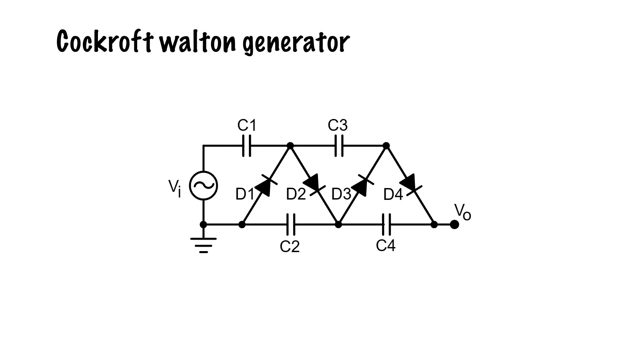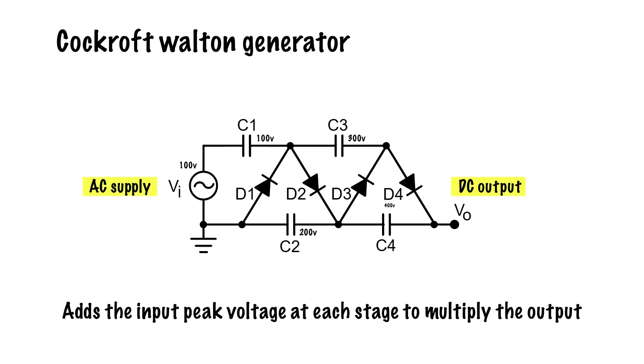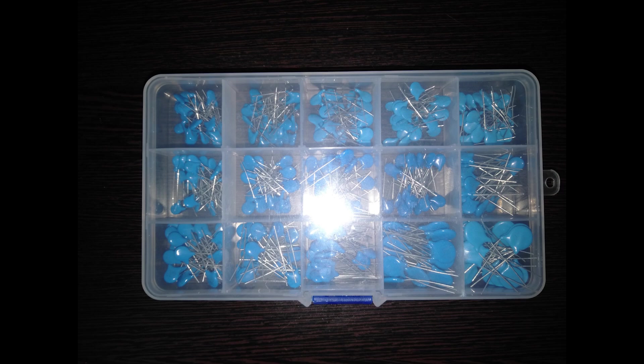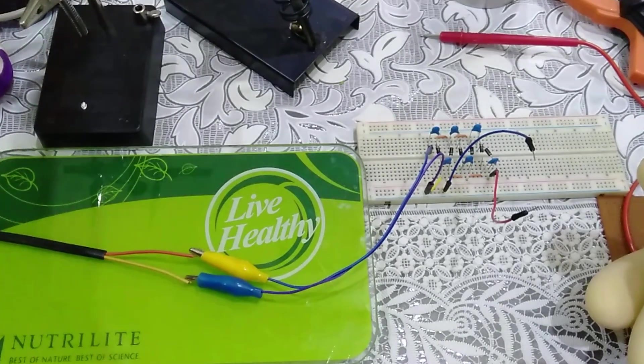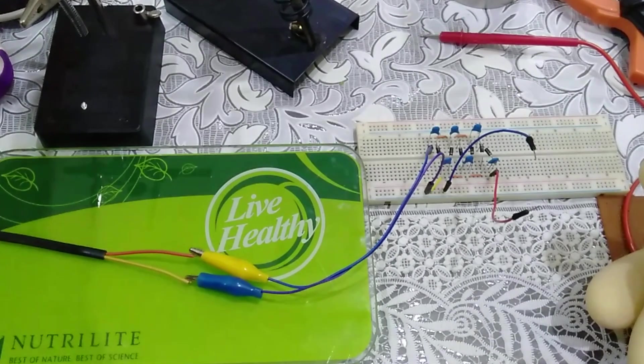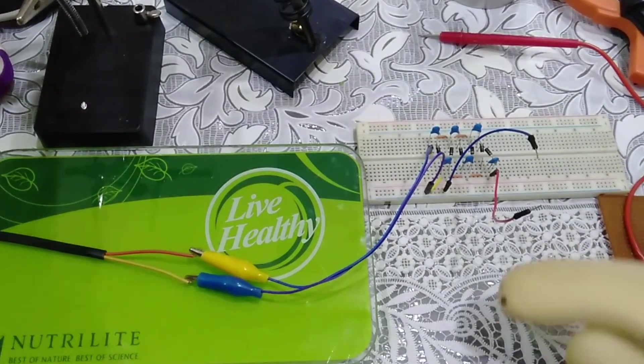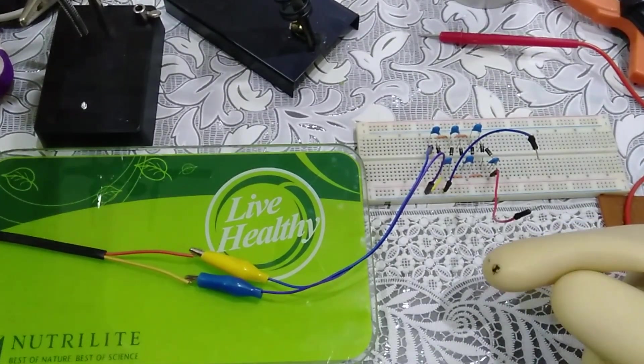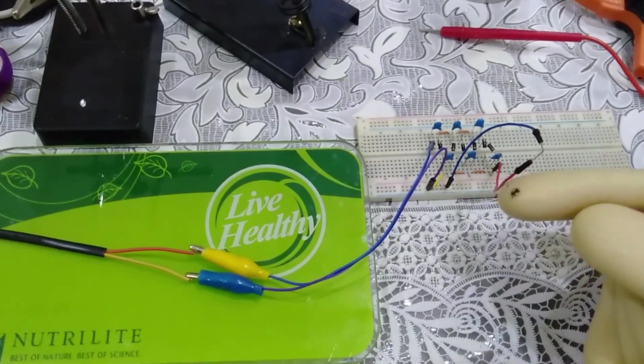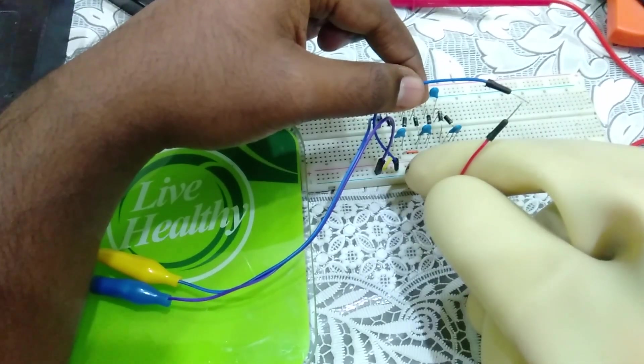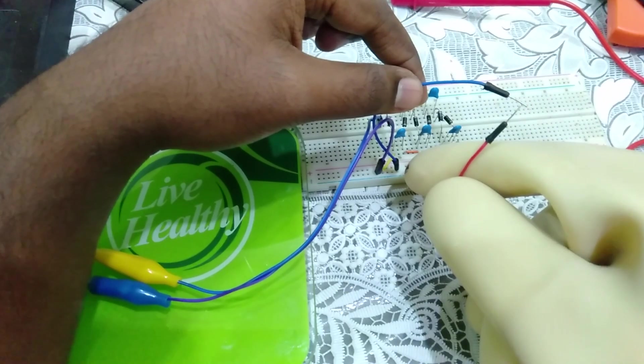We then came across Cockcroft voltage generator, a renowned voltage multiplier. Featuring a ladder pattern of capacitors and diodes, it converts AC into powerful DC. Its design allows for stacking stages, amplifying the output voltage with each added stage. After acquiring a set of high voltage capacitors, we proceeded to assemble a three-stage multiplier using 102 picofarad capacitors rated at 1kV. We then powered it using the typical household voltage of 230V AC in India. But the circuit disappointingly yielded very few sparks.